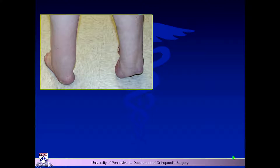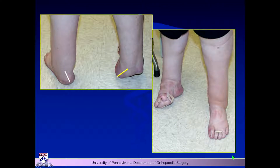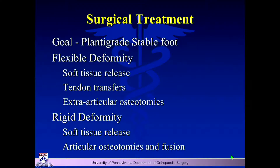You often see patients who are walking on the lateral side of their calcaneus — they've blown out the peroneals and lateral collateral ligaments. You can see the degree of varus in the heel and how that's driving the forefoot. Your goal is to get a stable plantigrade foot. If they're flexible, it's a combination of soft tissue releases and tendon transfers, because you have to balance things to prevent recurrence, along with extra-articular osteotomies.